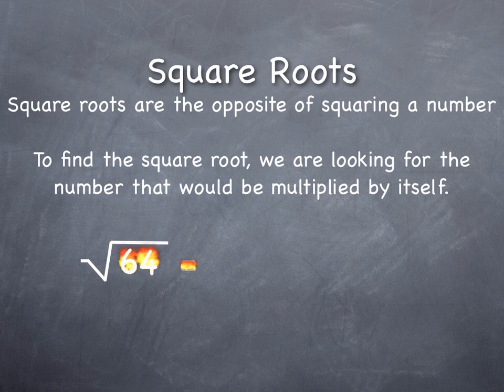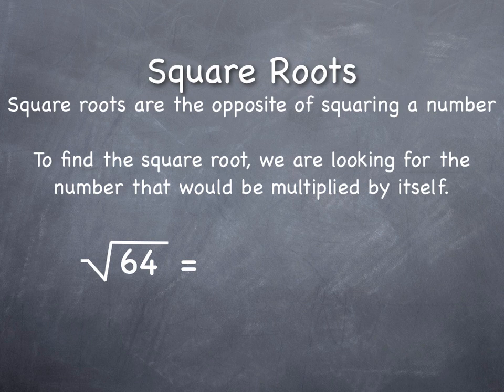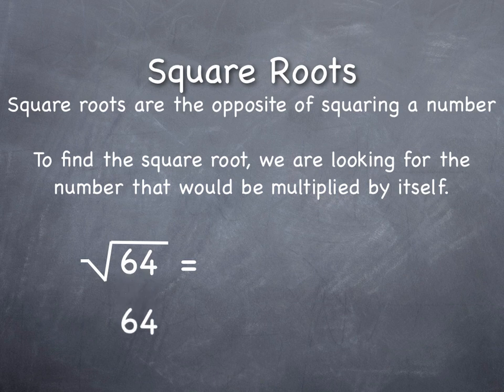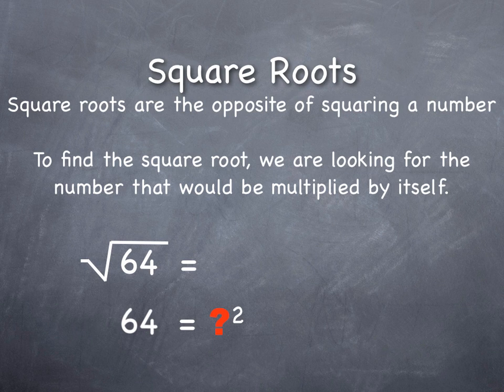We write the number underneath it. So we would read this question as the square root of 64. To figure out what the square root of a number is, we're really asking ourselves: 64 is equal to what number times itself?